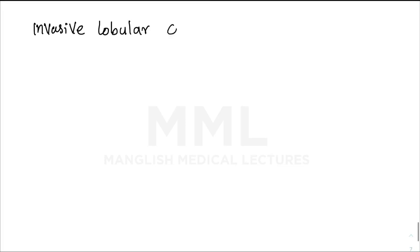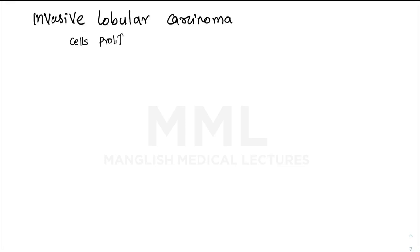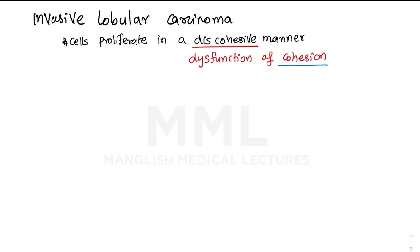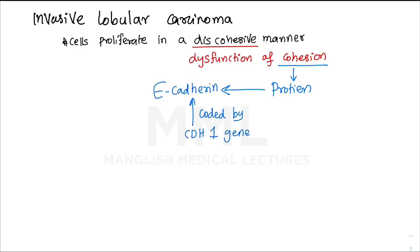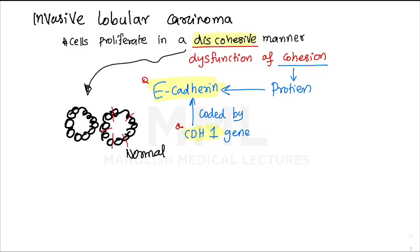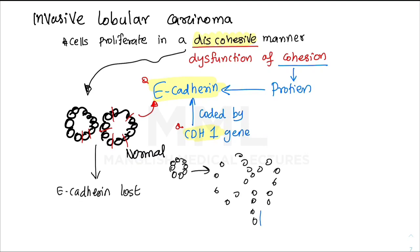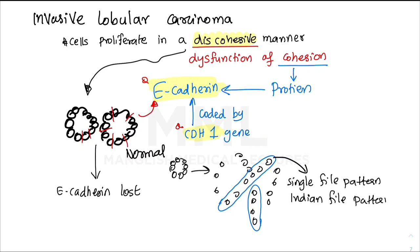Now let's discuss invasive lobular carcinoma under special types. Similar to LCIS, proliferation occurs in a discohesive manner due to loss-of-function mutation of E-cadherin, which is coded by the CDH1 gene. Because E-cadherin is lost, cells cannot form ducts and instead grow in a single file — known as the single file or Indian file pattern.